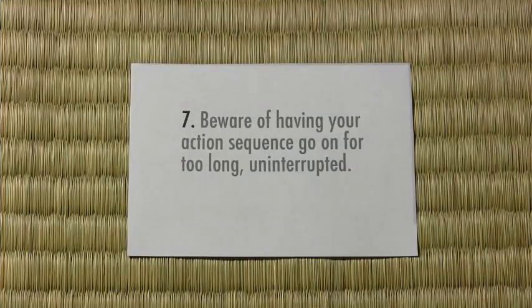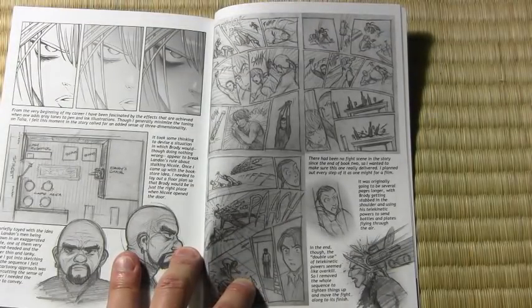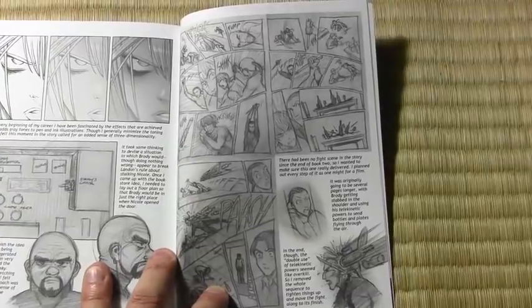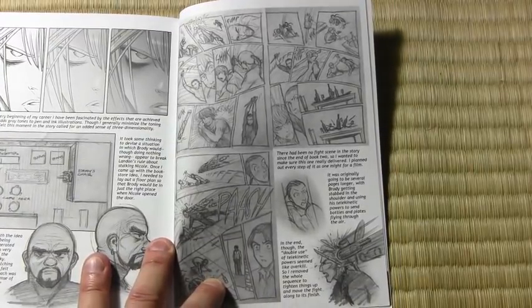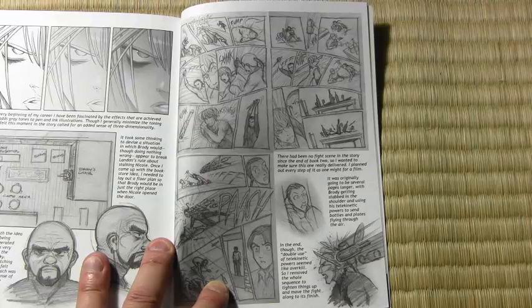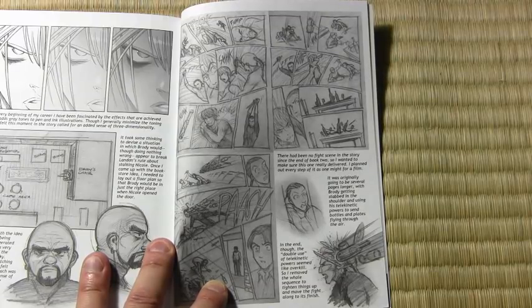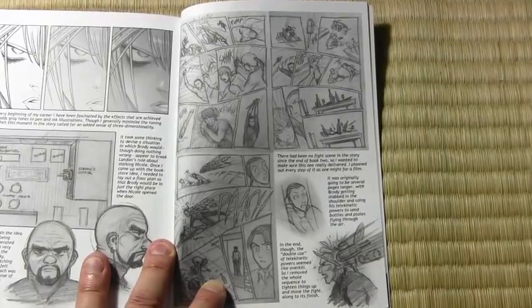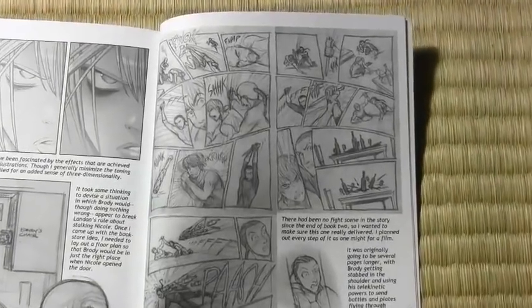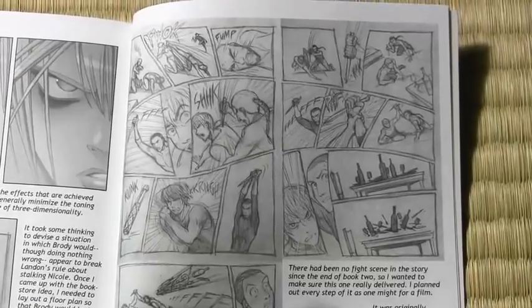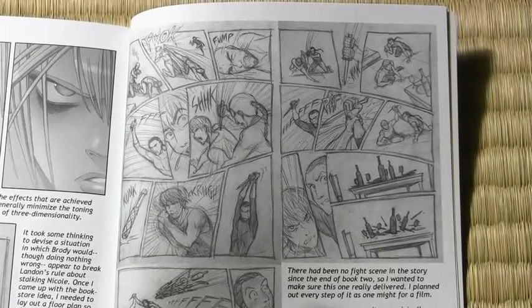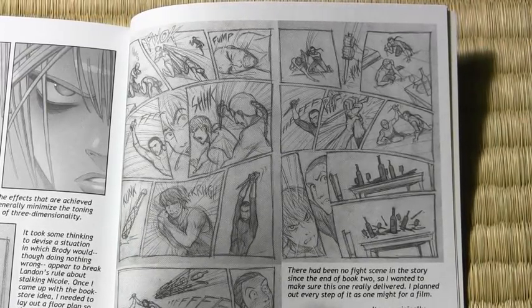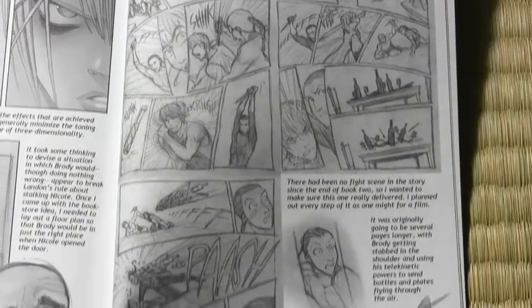Number seven: beware of having your action sequence go on for too long, uninterrupted. I showed this before in another video, but it's an important example of an action sequence that, as originally planned, went on a little too long. The fight scene in this Brody's Ghost story had three extra pages originally, but my editor said it starts to become boring when you have that many pages of action. The reader needs a break.